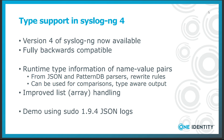Previously, even if syslog-ng parsed types properly, all name-value pairs were stored as if they were strings. You could hint the type information on the destination side, but it was a painful manual process. As syslog-ng now stores type information with name-value pairs, the JSON template function and various destinations can send proper type information. For example, if you extract temperature data from log messages, you do not have to configure the type manually anymore on the syslog-ng side or in the destination database.